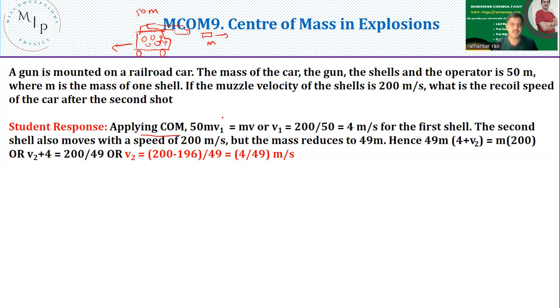What is the momentum before explosion? The car, the mass, everything is at rest. So V equals 0, hence momentum before is 50M multiplied by 0. Momentum after explosion: 50M into 0 should equal M into 200 minus, because it goes in this direction, and whatever mass is left out which is 49M, multiplied by the recoil velocity. So I should be getting V equals minus 200 by 49M.